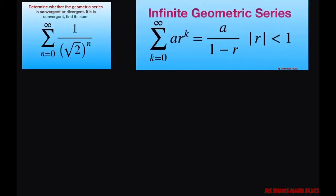So I'm going to rewrite this summation as the sum from n equals 0 to infinity. I'm just going to rewrite it as 1 divided by square root of 2 to the power of n. That's something more we're used to.